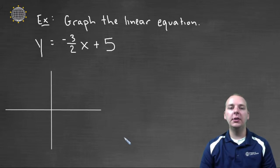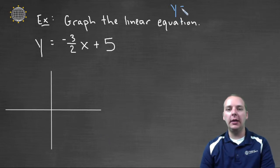Let's try to graph a few linear equations that are written in slope-intercept form. So slope-intercept form, you'll recall, looks like y equals mx plus b.